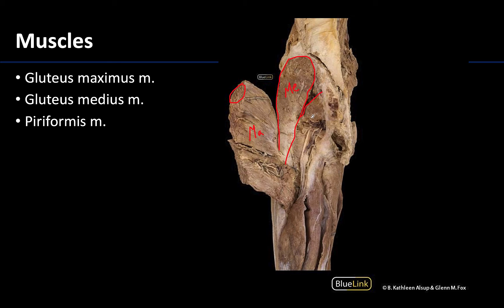Located inferior and medial to the gluteus medius is the piriformis muscle — the key to the hip, a learning objective to remember. With the gluteus maximus reflected, you can see the gluteus medius and the piriformis.